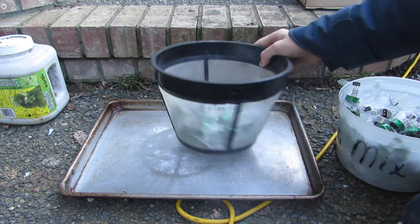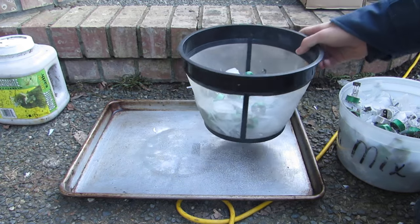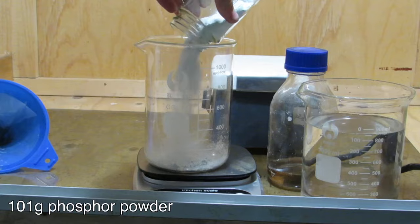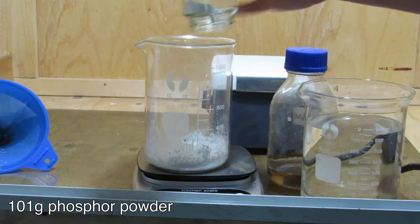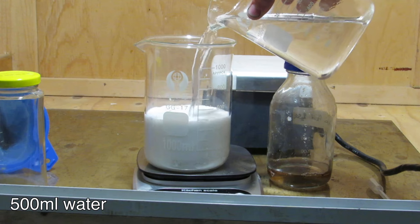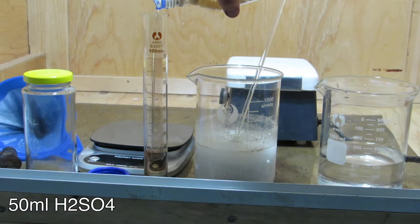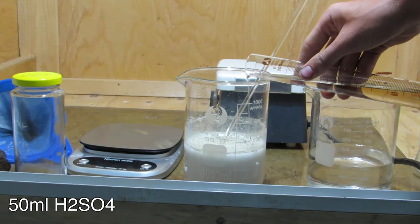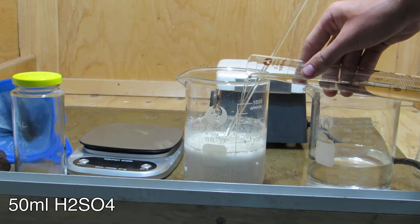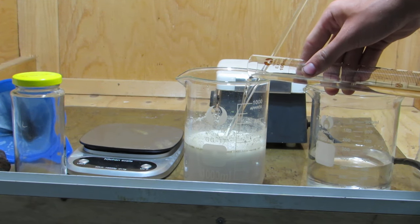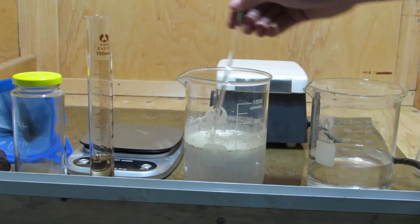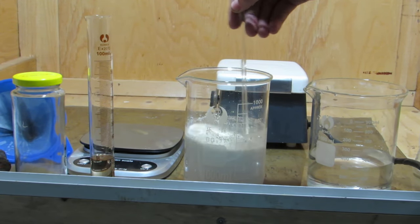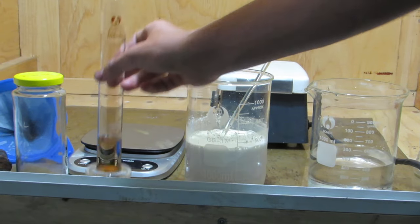We will be processing the other rare earth elements from the phosphor powder in future videos as well. To begin, 101 grams of phosphor powder can be added to a 1 liter beaker, along with 500 milliliters of distilled water. 50 milliliters of concentrated sulfuric acid can then be added, which I show how to make in a previous video. I could not find data online regarding the yttrium concentration of fluorescent phosphor powder, but assuming that half of the phosphor is yttrium oxide, 50 mils is the stoichiometric amount of sulfuric acid.